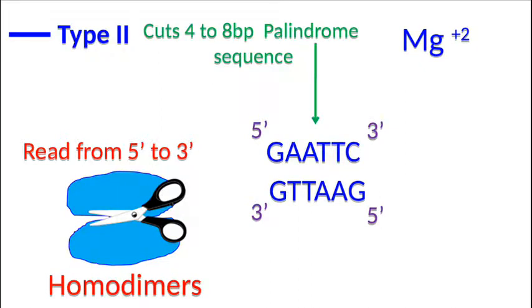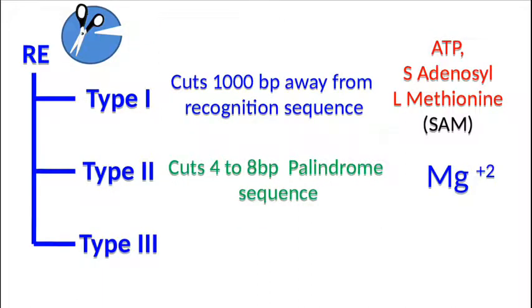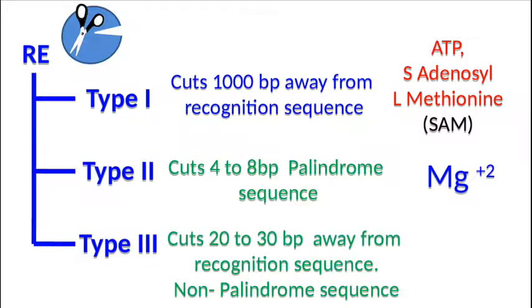Type 3 restriction enzymes recognize two separate non-palindromic sequences which are inversely oriented. Type 3 restriction enzymes cleave 20 to 30 base pairs after the recognition site.